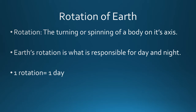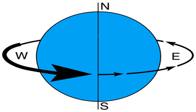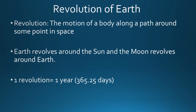Moving into Earth's motion, rotation is the first vocabulary word. Rotation is the turning or spinning of a body on its axis — like standing in place and turning around in a circle. Earth's rotation is what makes day and night: one rotation equals 24 hours, or one day. Earth rotates in a counterclockwise motion — going backwards around the clock from 12 to 11 to 10 and so on.